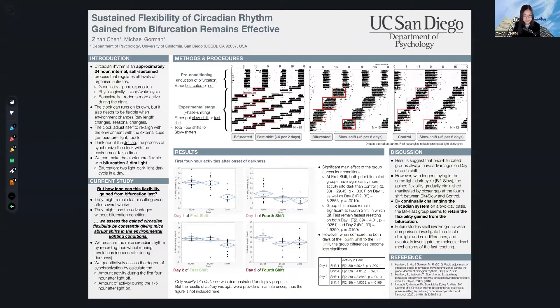Previous studies have already successfully made the clock more flexible with a simple light manipulation called bifurcation. A flexible clock means fast adaptation to environmental changes, and bifurcation is a light manipulation that splits a 24-hour day into two light-dark-light-dark cycles instead of one.